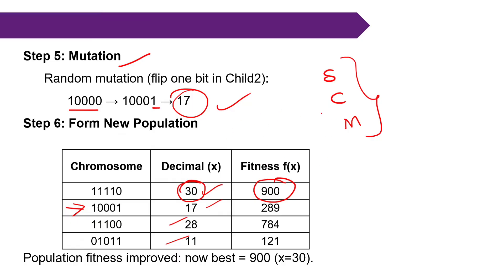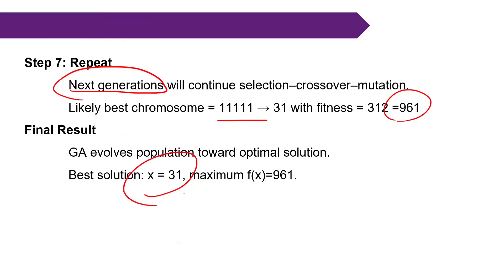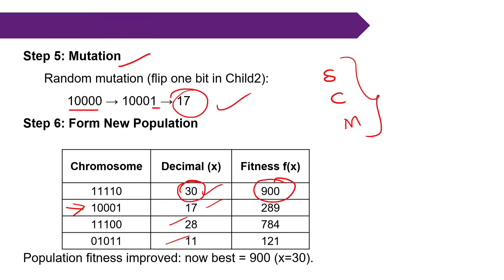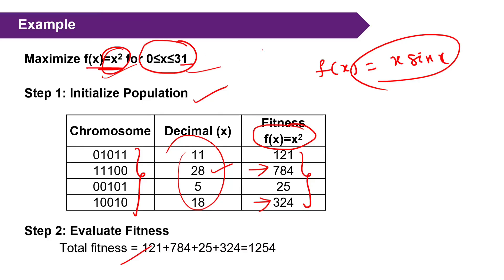The same operations — selection, crossover, and mutation — are repeated continuously. After multiple iterations the fitness keeps improving; for example reaching 1961. Finally, the best solution converges to x = 31. Since the fitness function is x², the maximum value in the range 0 to 31 is expected. For a different function like f(x) = x·sin(x), the answer would not necessarily be 31.